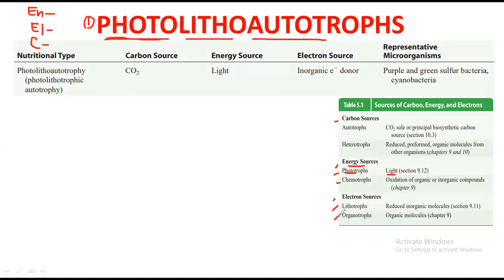According to the electron source, microorganisms are divided into lithotroph and organotroph. When they get their electrons from an inorganic molecule, they are called lithotrophs. When they get their electrons from an organic molecule, they are called organotrophs. Here, 'litho' means they are getting their electrons from inorganic molecules.